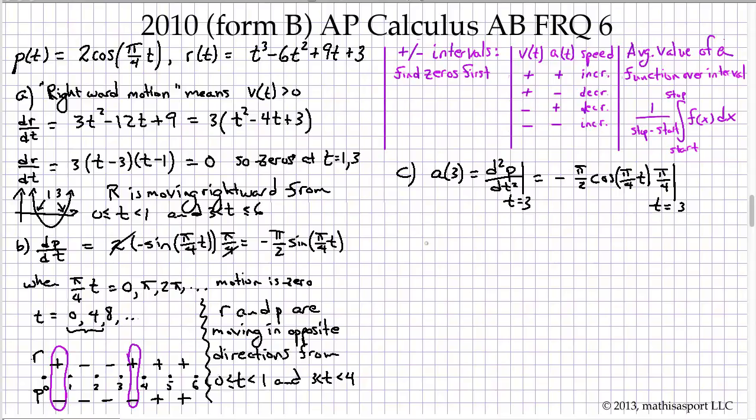We get negative π/2 cosine π/4t times another factor of π/4 by the chain rule. And all of that has to be evaluated at t equals 3. Let's consolidate the terms.